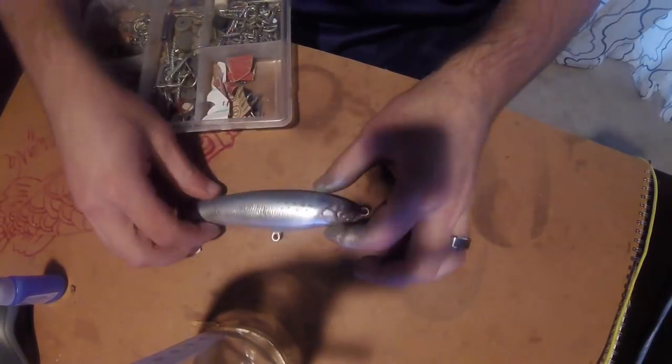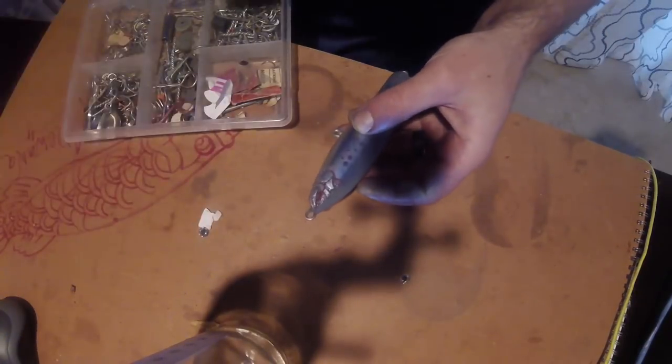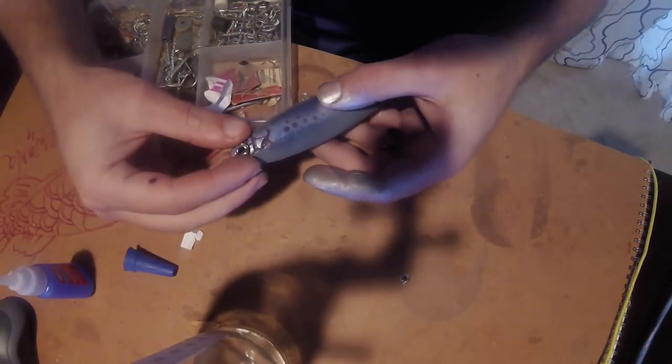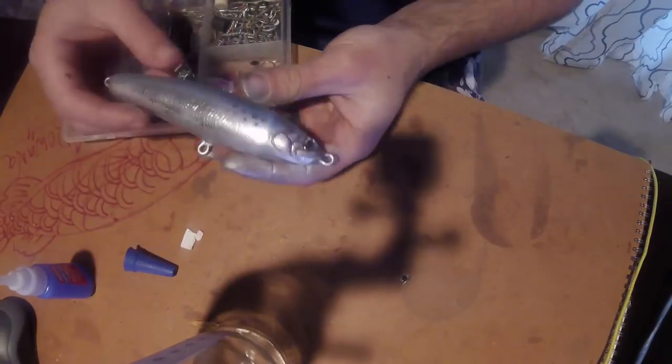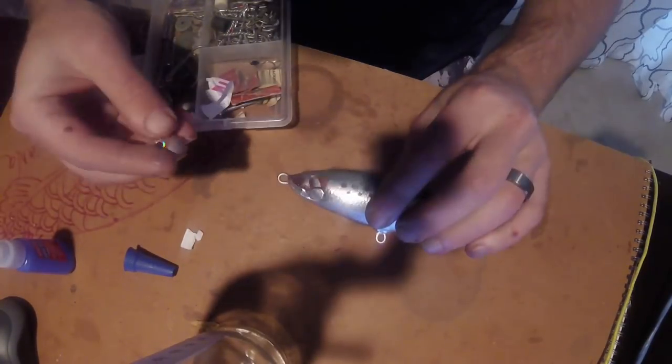Anyway. Here we've got the lure before epoxy. We're just fitting the eyes on right here. Looks pretty good. The eyes are a little bit big. For the head. But that's okay.